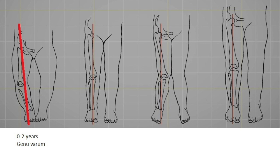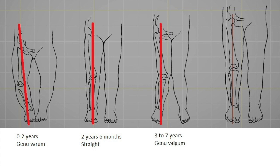In normal development, from 0 to 2 years there is genu varum. At 2 and a half years the limbs are straight. From 3 to 7 years there is genu valgum, and the limbs should be straight by age 8. The limbs are straight when the hip joint, knee joint, and ankle joint are in alignment.